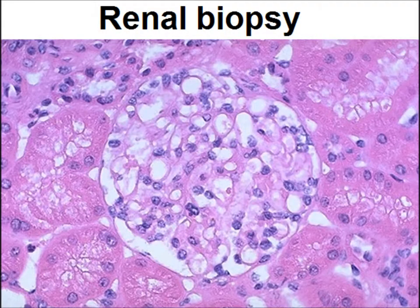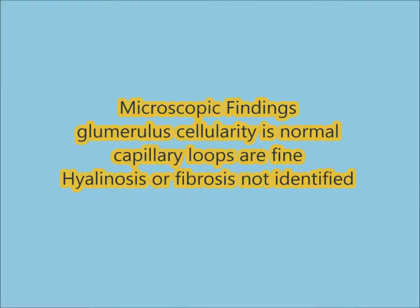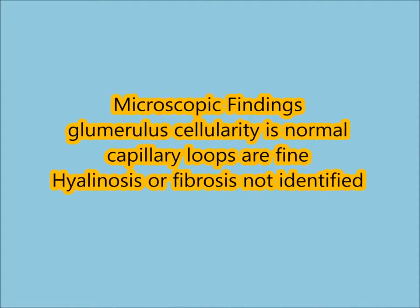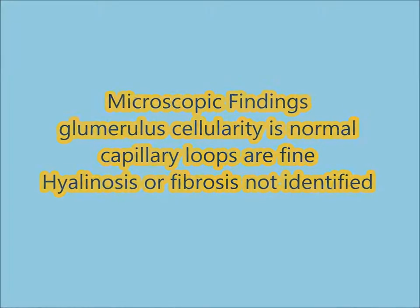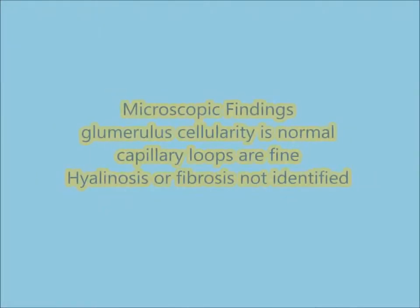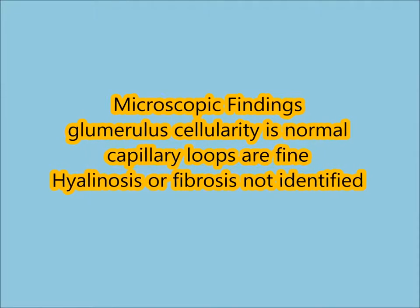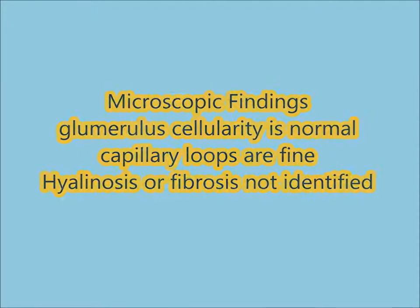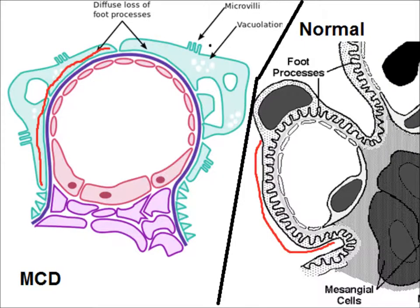We can see that there is no abnormality at the light microscopic level. Glomerulus cellularity is normal. Capillary loops are fine, and there is no hyalinosis or fibrosis. Electron microscopy in this case would show effacement of foot processes. On the right is a normal glomerulus; on the left is minimal change disease.